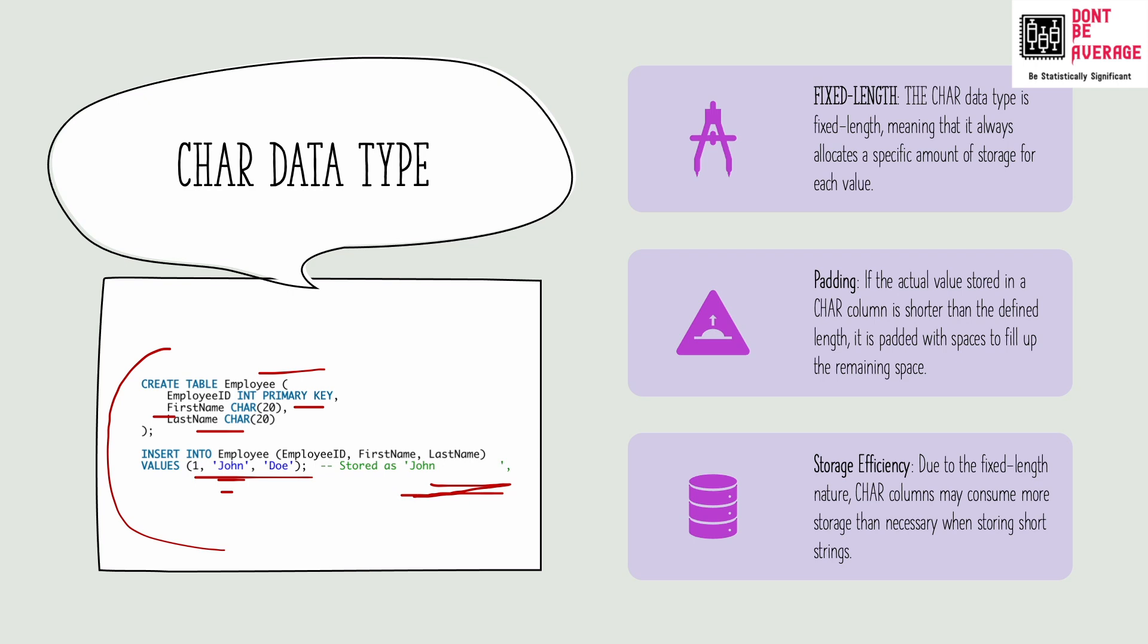Since the first name column is defined as a char 20, anything, any data that gets passed into this column needs to have a fixed length of 20. We have passed John which has a length of 4. It's not 20. To maintain 20 length, it is filling that up with spaces. That's what you're seeing here.